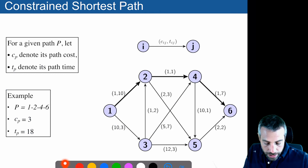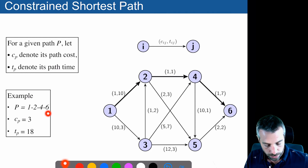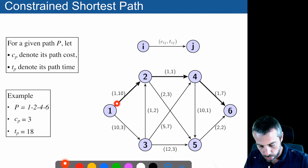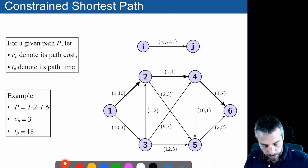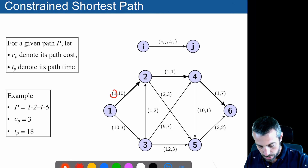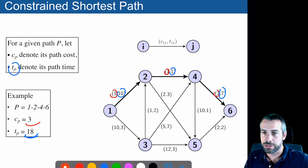In the next slides I will use the following notation: c(p) for the cost of a given path p, and t(p) for the resource consumption. A path is denoted as the set of vertices visited, so path 1-2-4-6 means visiting nodes 1, 2, 4, 6 — shown in bold here. For that path, the cost c(p) equals 3, and the total time t(p) is 10 plus 1 plus 7, which equals 18.